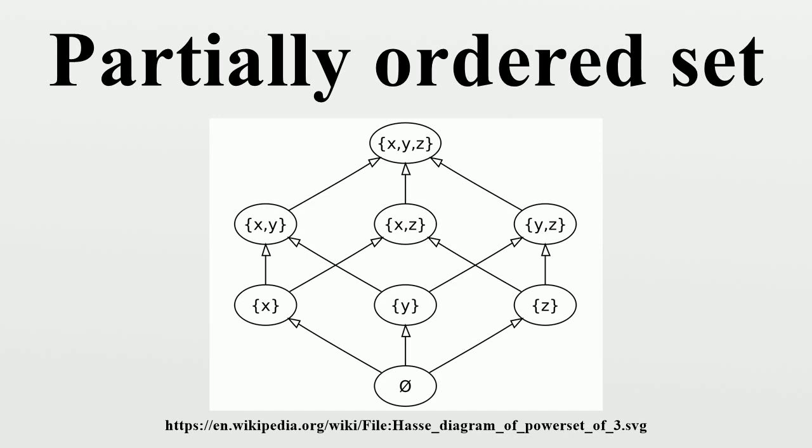An element A is said to be covered by another element B, written A < B, if A is strictly less than B and no third element C fits between them. Formally, if both A ≤ B and A ≠ B are true, and A ≤ C ≤ B is false for each C with A ≠ C ≠ B. A more concise definition will be given below using the strict order corresponding to ≤. For example, X is covered by (X,Z) in the top right figure, but not by (X,Y,Z).